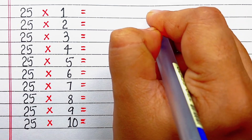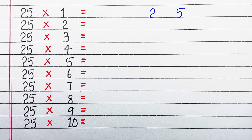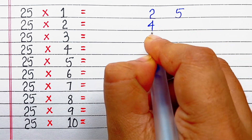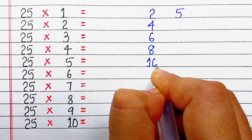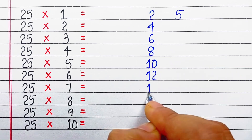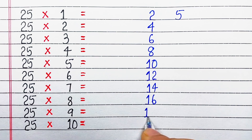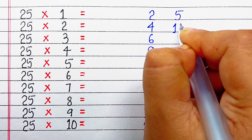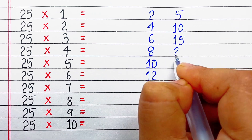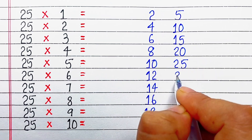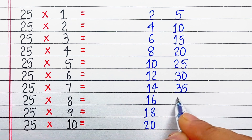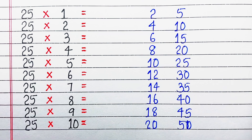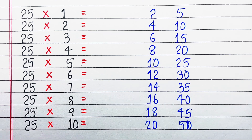Now let's learn the trick for the table of 25. To the left hand side we'll write the table of 2. To the right hand side we'll write the table of 5: 5 ones are 5, 5 twos are 10, 5 threes are 15, 5 fours are 20, 5 fives are 25, 5 sixes are 30, 5 sevens are 35, 5 eights are 40, 5 nines are 45, 5 tens are 50. Now we'll combine both the numbers.